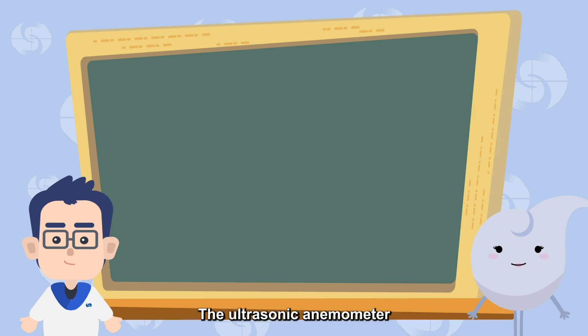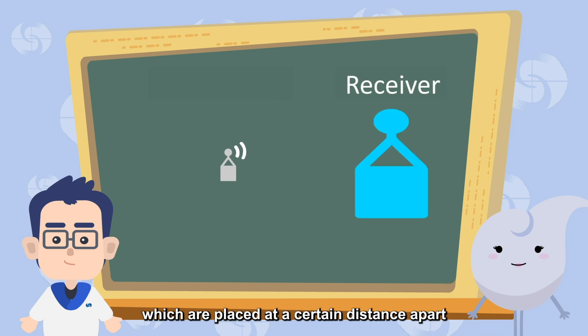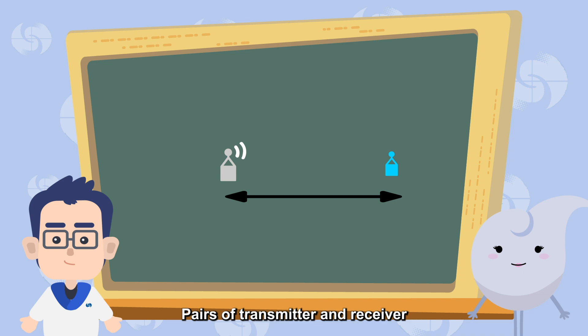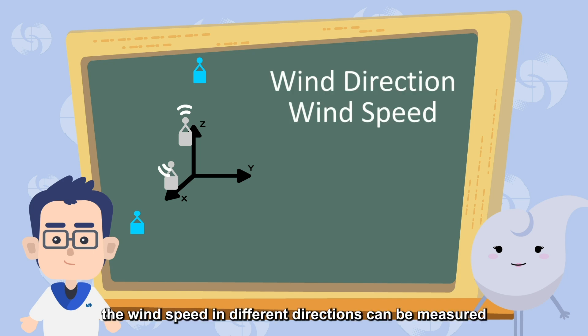The ultrasonic anemometer has signal transmitter and receiver, which are placed at a certain distance apart. Pairs of transmitter and receiver will be placed in different directions. In this way, the wind speed in different directions can be measured, so as to obtain the direction and speed of the wind.